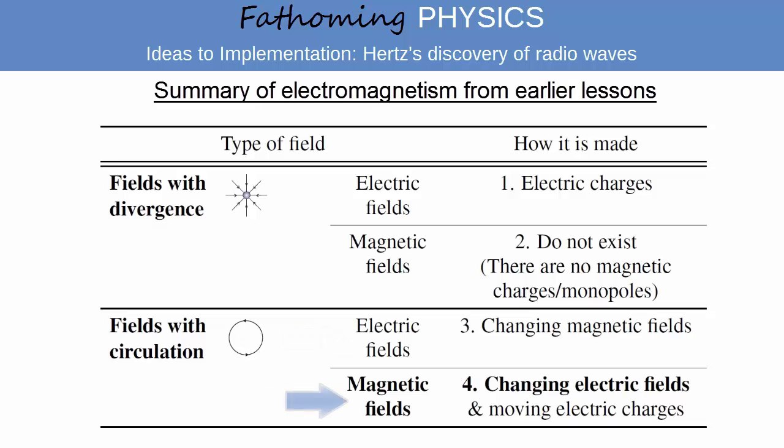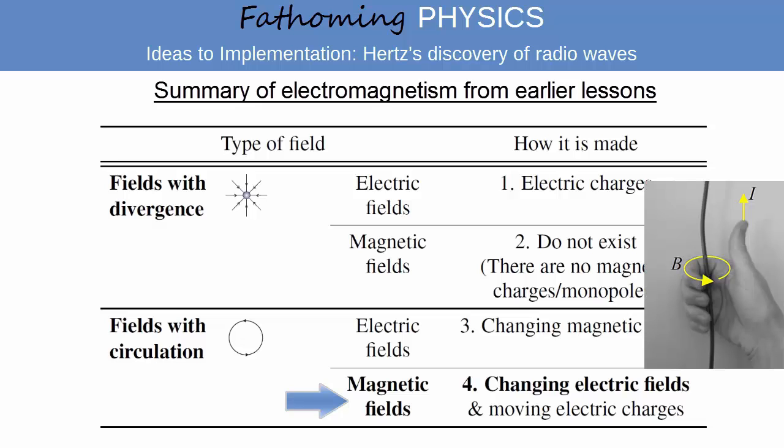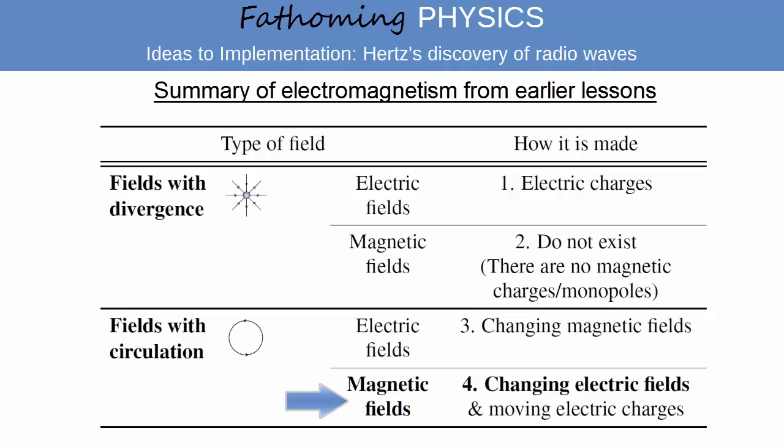The final equation describes how there are two ways to make a magnetic field with curl. It can be made with moving charges. You know this as the right-hand grip rule for the magnetic field around a current carrying wire.